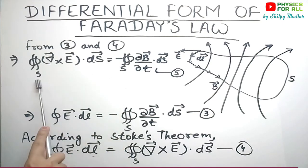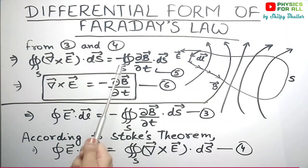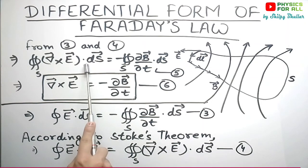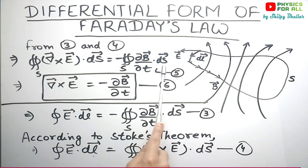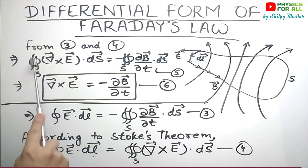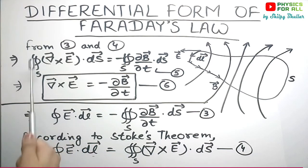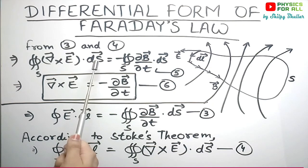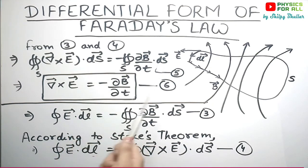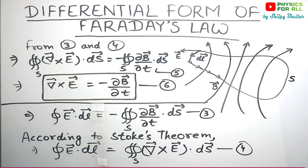Now we have a double integral over the closed surface S on both sides, so we can simply remove them. On removing the integrals, we get: del cross E equals minus ∂B/∂t. The quantities dS are associated with the integral and are also removed from both sides. We have now obtained a purely differential form of Faraday's law — this expression contains no integral sign.